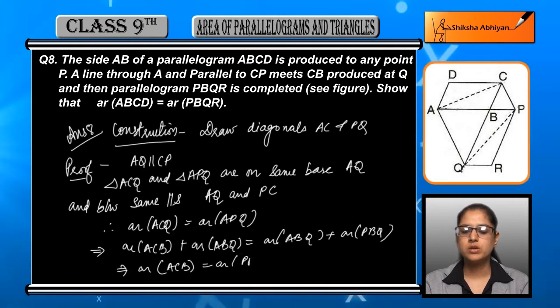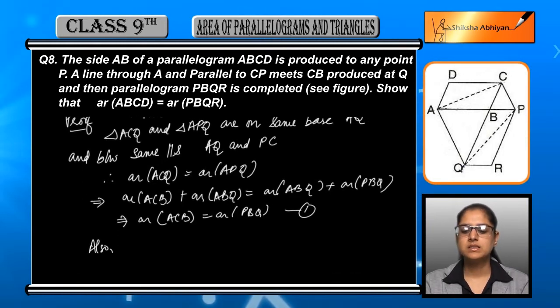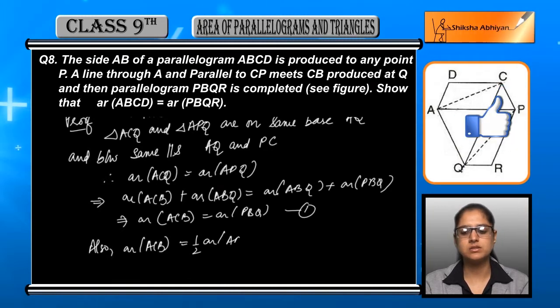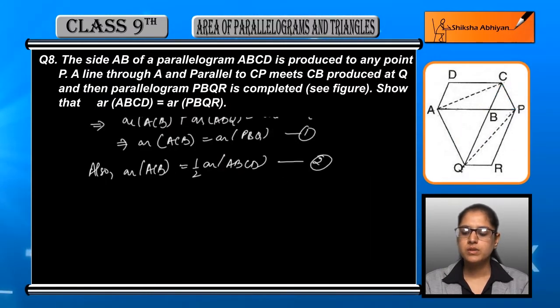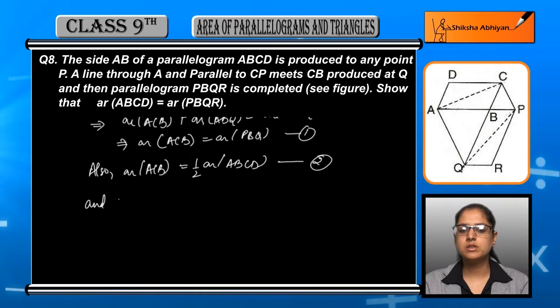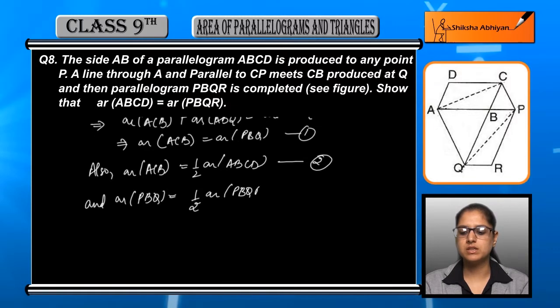Cancelling ar(ABQ) from both sides, this is equation 1. Further proceeding with the proof, ar(ACB) = 1/2 ar(ABCD), so the parallelogram ABCD is half the area of triangle ACB. This is equation 2.